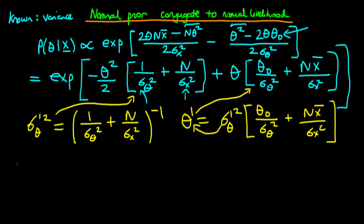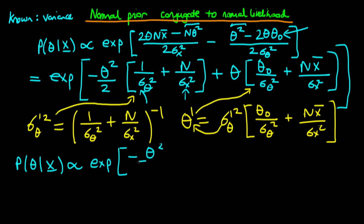Now if we collect up those terms, we find that the posterior density — the probability of theta given our data x — is actually proportional to the exponent of minus theta squared over 2 sigma prime theta all squared, plus theta times theta prime, all divided through by sigma prime theta squared.